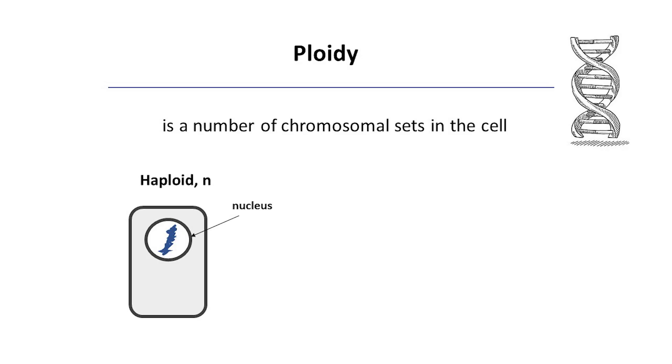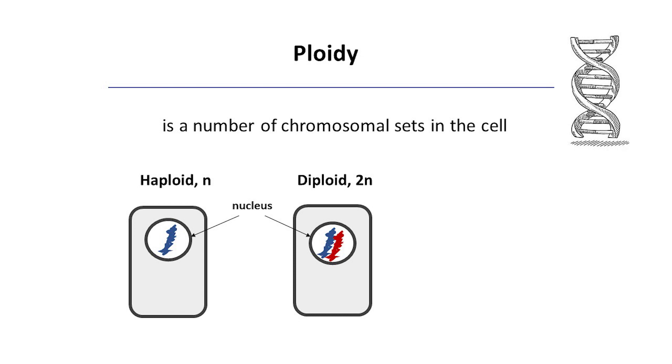During sexual reproduction, cells at a specific stage of development may have a different number of chromosomal sets — in other words, cells may have a different ploidy. A haploid cell has only one set of chromosomes and is designated as N, while a diploid cell contains two sets of chromosomes, or 2N. The term haploid came from the Greek 'haplous' meaning single, and the prefix 'di' means two.